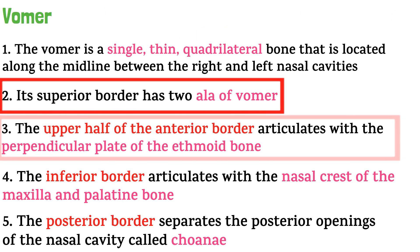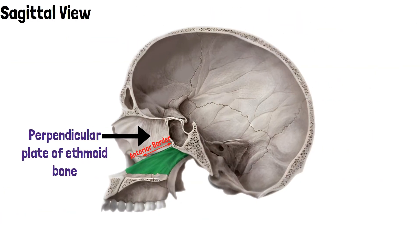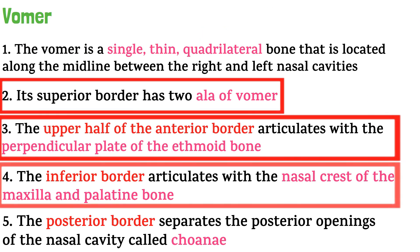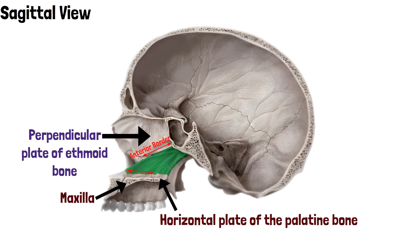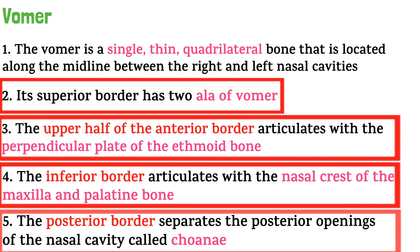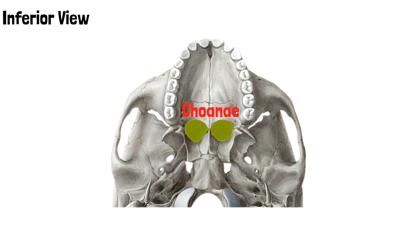In the sagittal view of the skull, this is the perpendicular plate of the ethmoid bone. The upper half of the anterior border of the vomer articulates with the perpendicular plate of the ethmoid bone, as seen here. The maxilla and the horizontal plate of the palatine bone are present, and the inferior border articulates with the nasal crest of these bones. The superior border fits the rostrum of the body of the sphenoid bone.